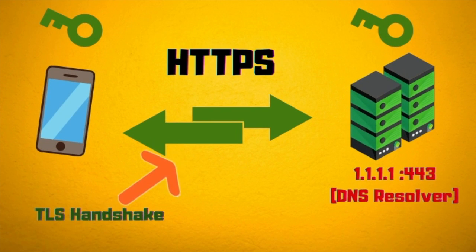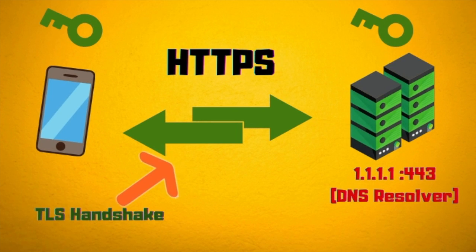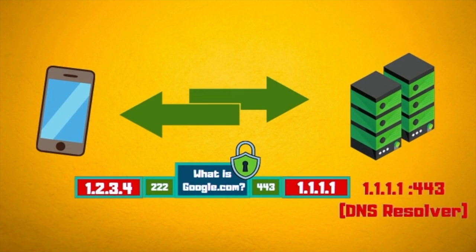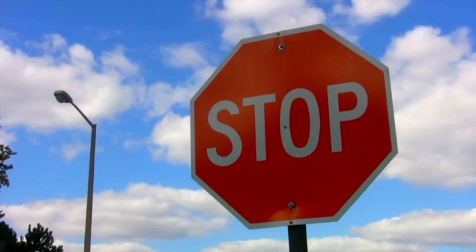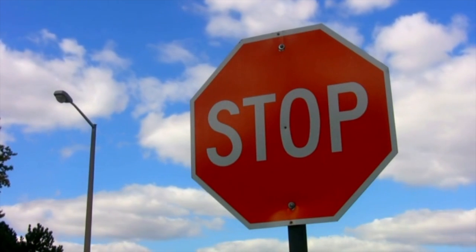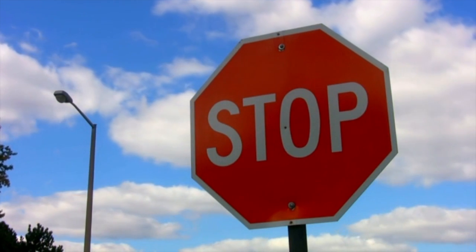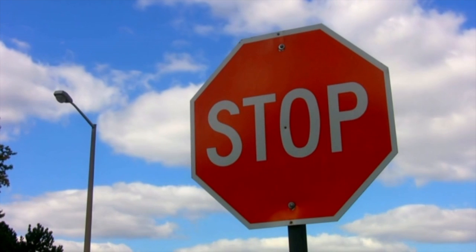DNS over HTTPS establishes a secure connection through TLS between the client and the resolver. This way the DNS query is sent encrypted with a symmetric key agreed upon by both the server and the client. This stops anyone in the middle from sniffing the content of the DNS queries.